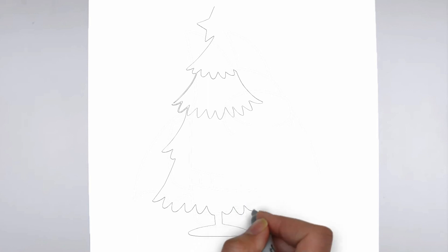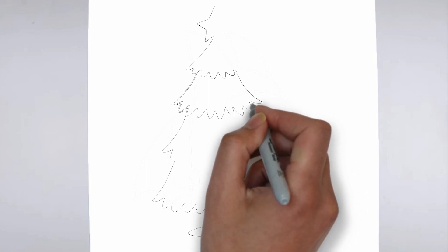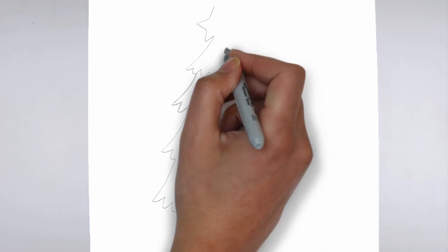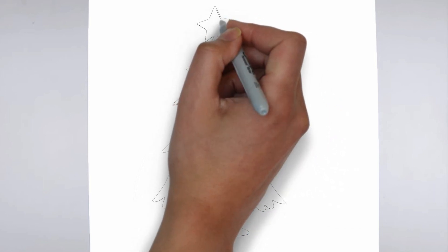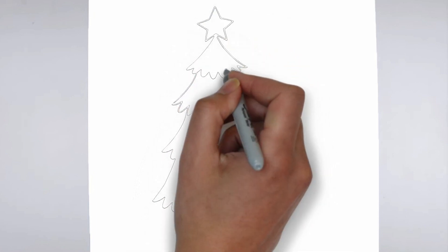Next, we'll start to add some details. Using darker, more defined lines, begin to add in the features of your subject. Pay close attention to the reference image or object you're drawing from, and take your time to get the details just right.